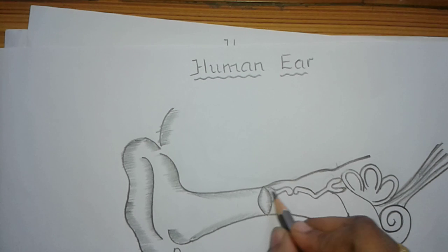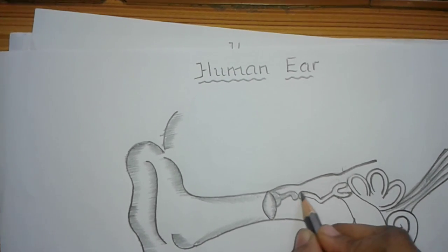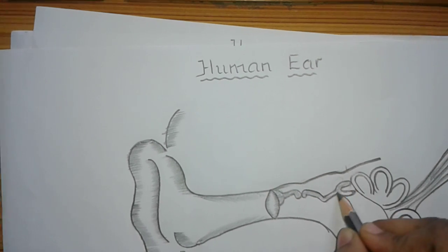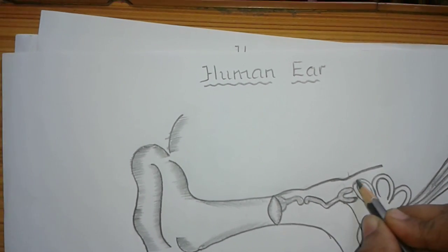Just shade the three bones: malleus, incus, and stapes, and the semicircular canals.